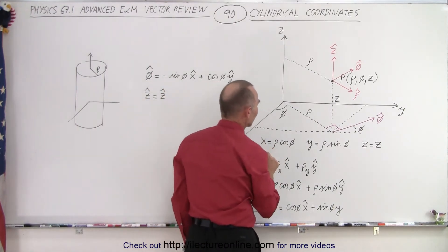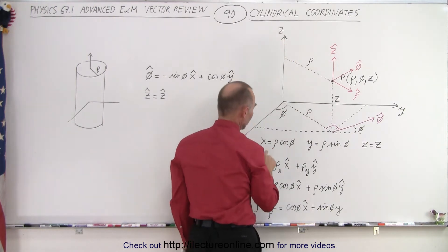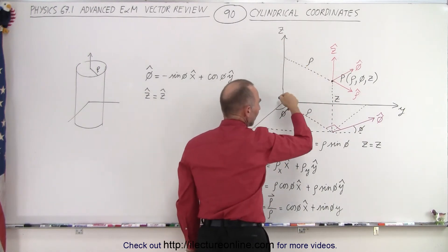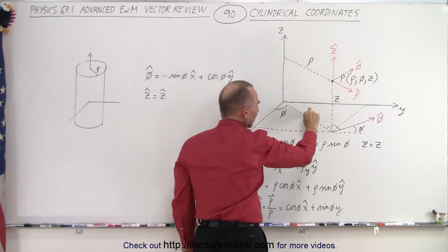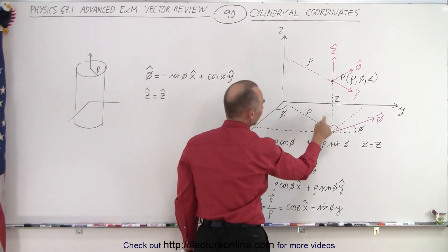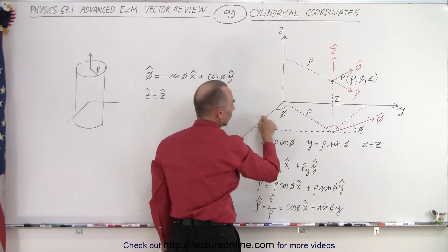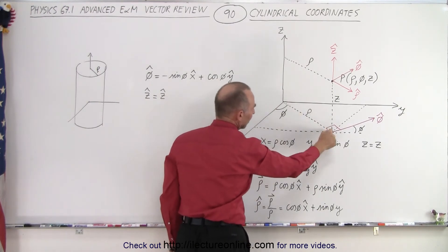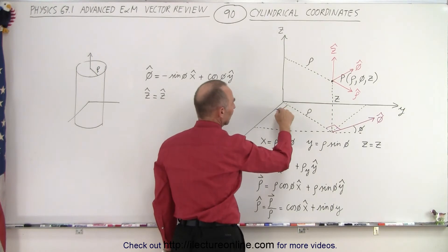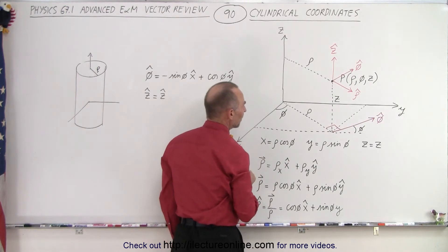If you want to figure out the X component in cylindrical coordinates, X is equal to the distance from the Z axis to the point projected down on the XY plane. To get the X component, we take rho, which is the hypotenuse, and multiply by the cosine of phi because the angle is adjacent to the X component. So X equals rho times the cosine of phi.